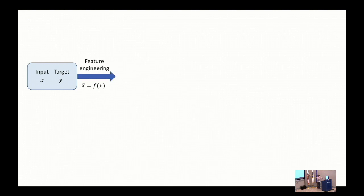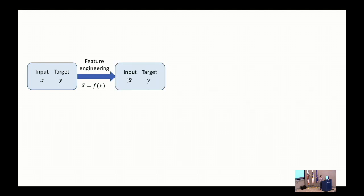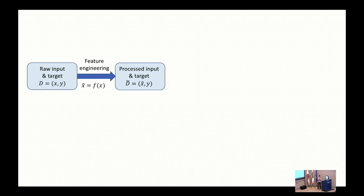Before deep learning, we had to do feature engineering. For example, if you're taking pictures and want to train a face recognition algorithm, you'd have to hand-engineer features like shape of the eyes or width of the nose. Someone with subject matter expertise had to use that knowledge and encode it into a function f that takes raw input x and transforms it into features. Once transformed, you have the processed input and target dataset ready for training.